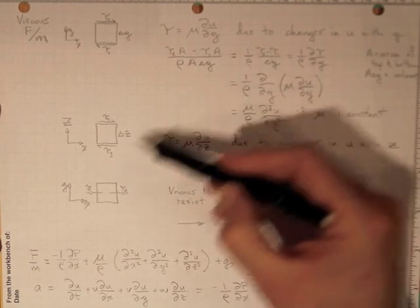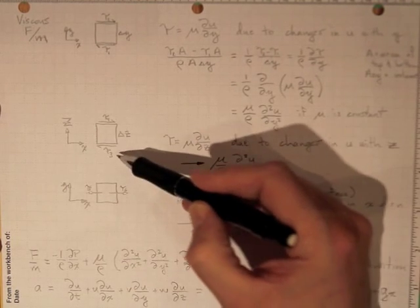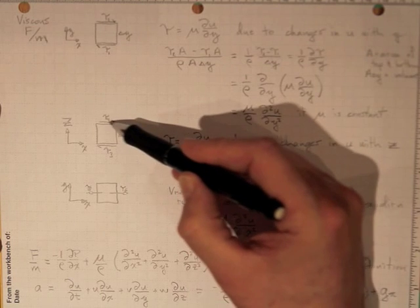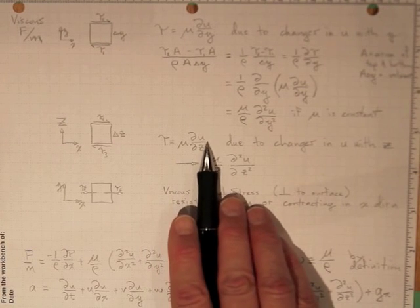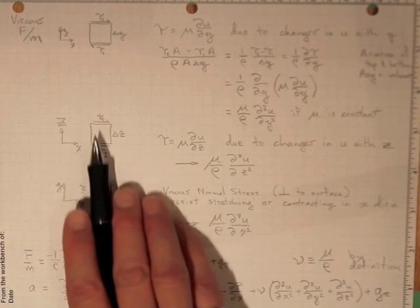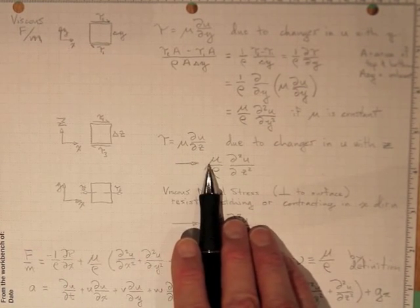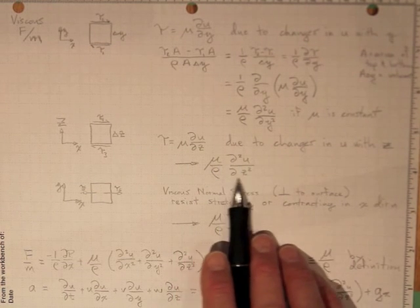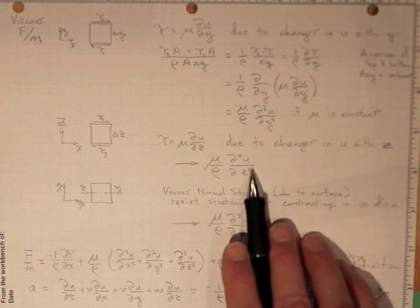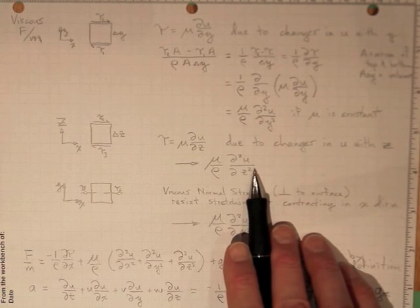And we'll still have tau equal to mu di u di z in this direction. And that's going to lead us to a term mu over rho di 2u di z squared. So we've now got two of the terms in our equation.